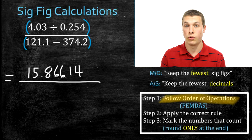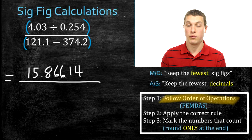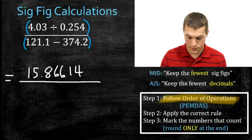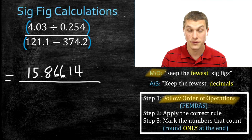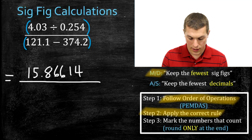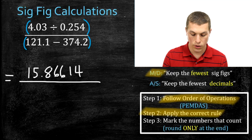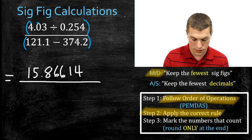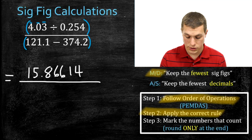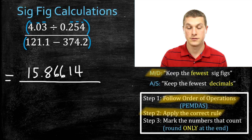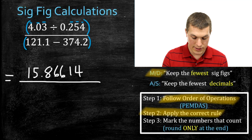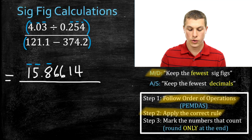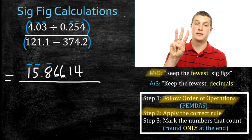It's always a good idea to keep all the decimals your calculator spits out so your answer doesn't drift from correct. Now I apply the correct rule — for multiplication and division, which says keep the fewest sig figs. 4.03 has 3 sig figs and .254 also has 3 sig figs, so my answer should have 3 sig figs. I'm not going to round — I just mark the digits that count: 1, 5, and 8. That number has 3 sig figs and 1 decimal.